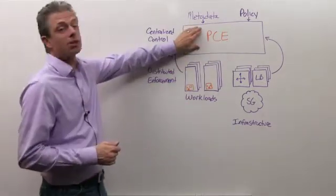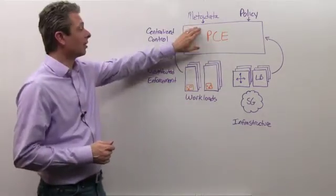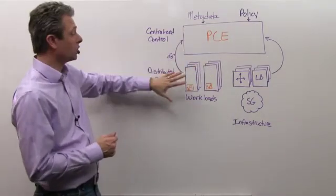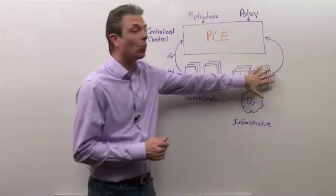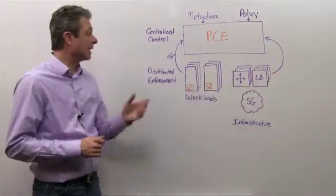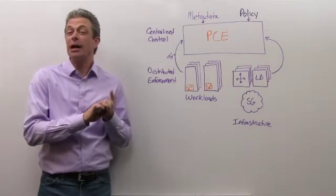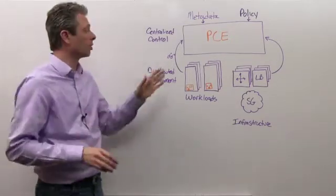The inputs to the policy compute engine are several. First of all, it gathers a variety of visibility information from the workloads as well as from the infrastructure, things like the ports and the protocols and the destinations and the processes that are behind those ports and protocols.